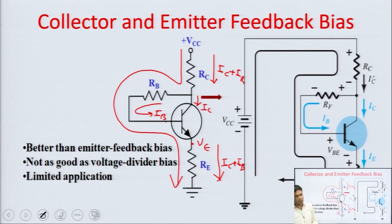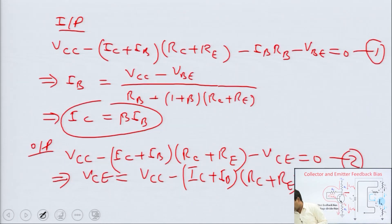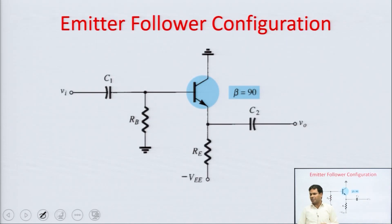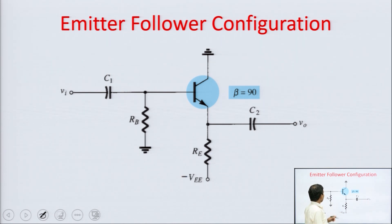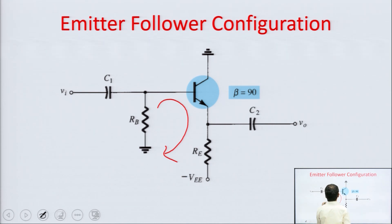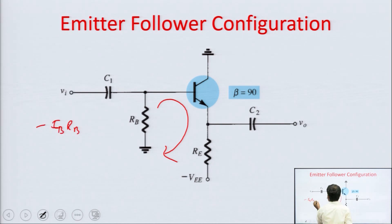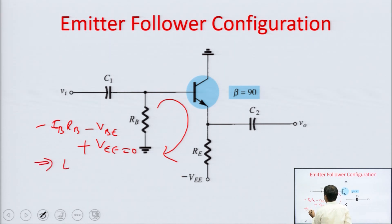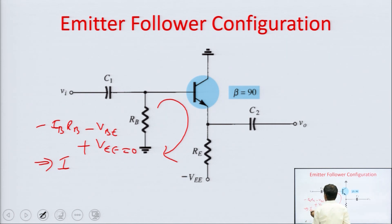You can explain physically how stability improves — emitter current increases and reduces VBE, reducing IB and hence IC. Similarly, for the emitter follower configuration: remove the capacitors, write the input KVL equation, and this is the common collector configuration, also called the emitter follower configuration. Its analysis follows the same approach — write the input equation to find base current.